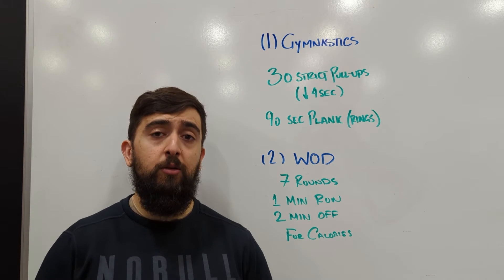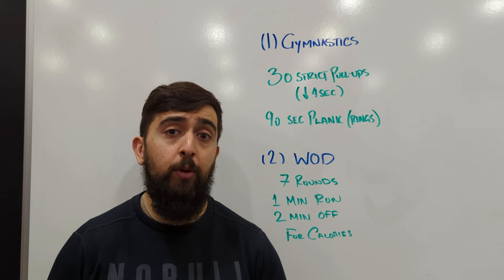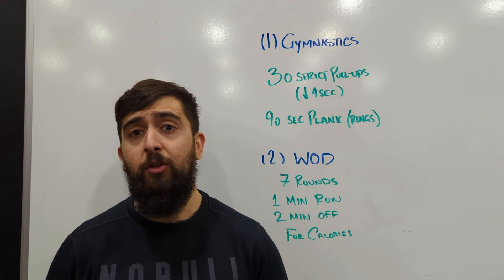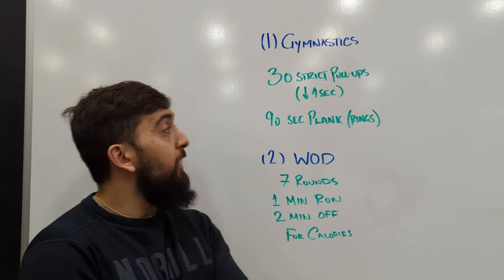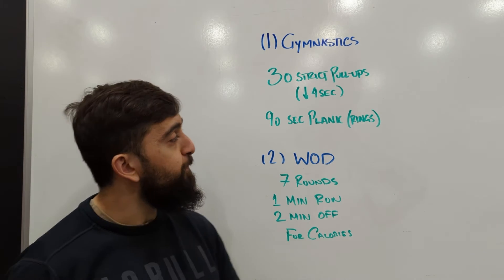If you haven't used the rings in a little while it might be worthwhile playing around with that, doing a slow negative on the way down. Remember different line of action, different stimulus could help you out with your strength and your overall pulling strength there.